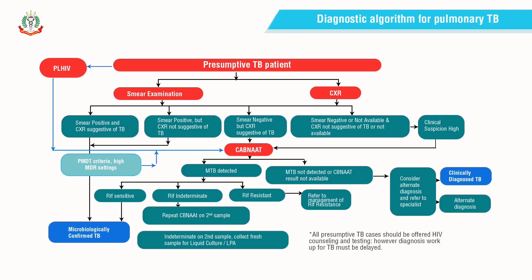Under the program, children, people living with HIV, and extra-pulmonary TB cases are eligible to get upfront CBNAAT for diagnosis of TB. If there is no microbiological confirmation from CBNAAT or smear, the clinician can still make a diagnosis of clinical TB with other corroborative evidence and after ruling out other conditions. In that case, a decision needs to be taken to treat the patient with a full course of anti-TB drugs. Your experience and day-to-day practice will be very useful in corroborating findings with history to label a patient as clinically diagnosed TB.